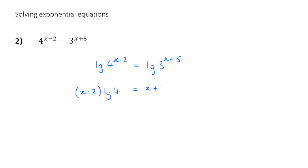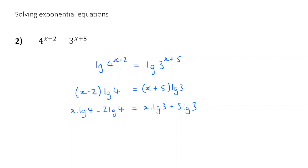So this will be x minus 2 times by log 4 is equal to x plus 5 times by log 3. Now remember I want to solve to find x, so I'm going to expand these brackets. I get x log 4 minus 2 log 4 is equal to x log 3 plus 5 log 3. And now I'm going to bring the x terms all to the left-hand side. So I get x log 4 minus x log 3 is equal to 5 log 3 plus 2 log 4.